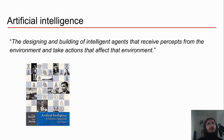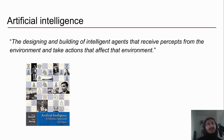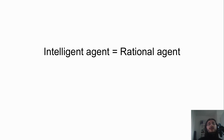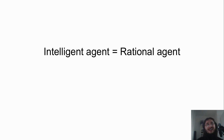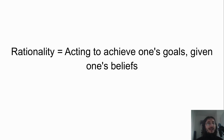One could ask: what's an intelligent agent? It seems we are shifting the definition of artificial intelligence towards that of an intelligent agent. An intelligent agent in the field of AI is basically a rational agent. But then what's rationality? What's a rational agent?